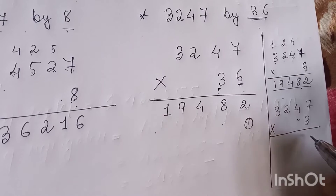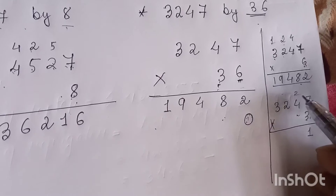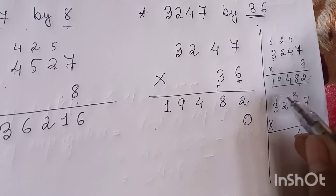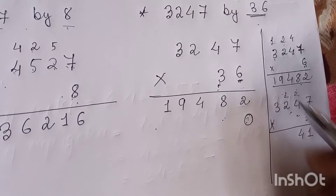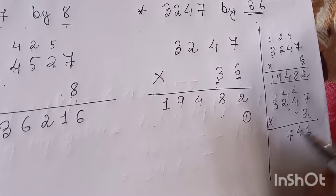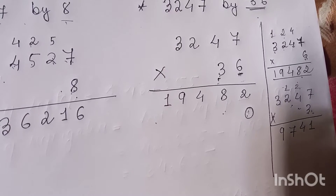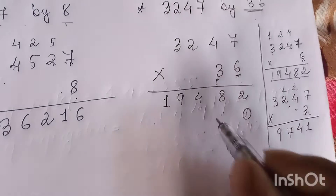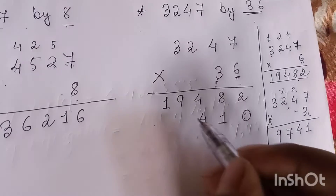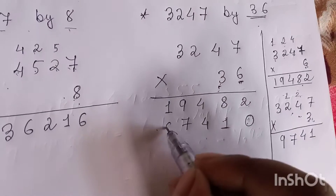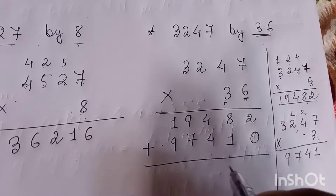Three sevens are twenty-one — write one, carry two. Three fours are twelve, plus one, thirteen — write three, carry one. Three twos are six, plus one, seven. Three threes are nine. The answer for this part is 9,741. Now we have to add these two results.